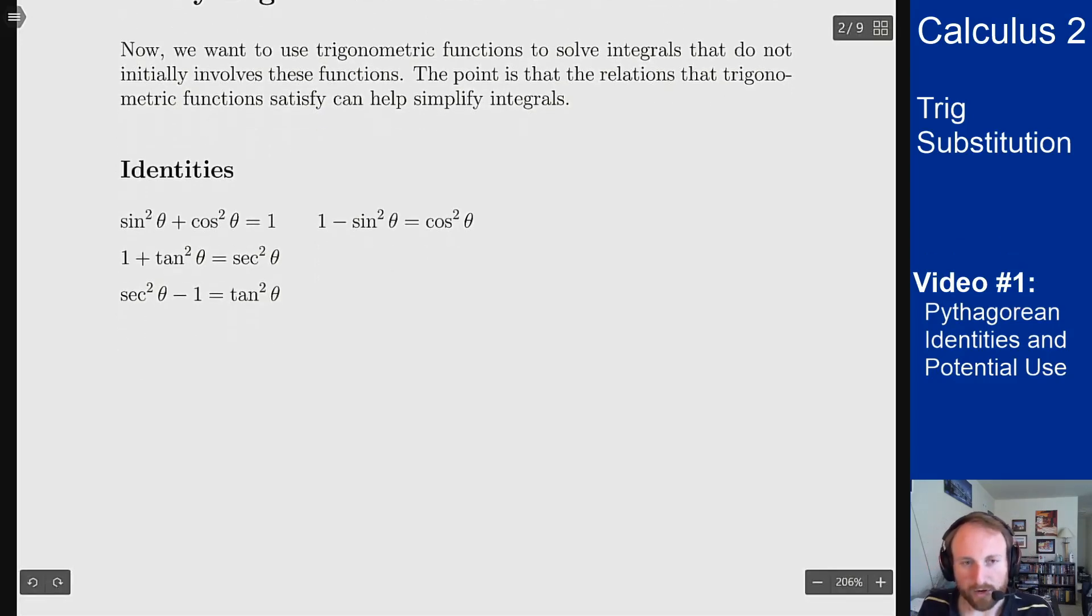The important things here to remember are our Pythagorean identities. Sin squared plus cosine squared is 1, 1 plus tan squared is secant squared, and secant squared minus 1 is tan squared.